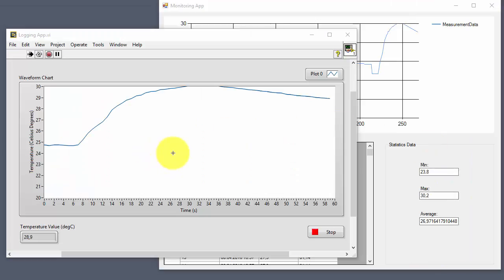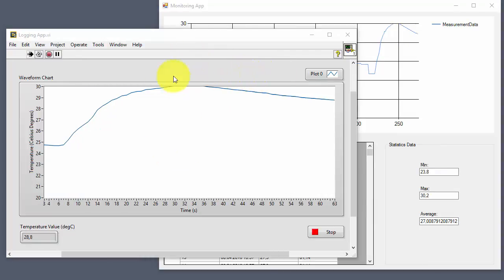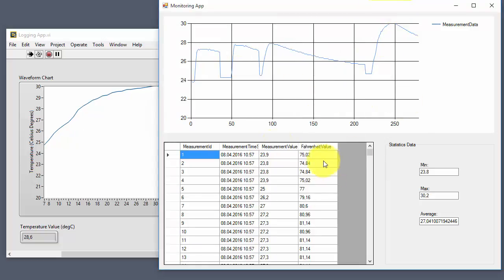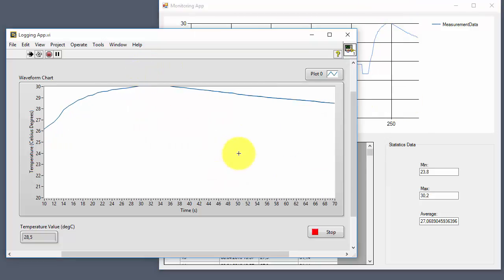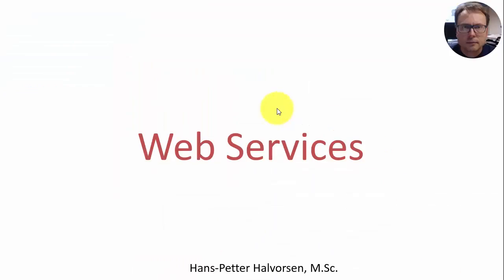This example shows how easy it is to create a measurement system with a data logging application and monitoring application where the data are stored in the cloud and all the analysis is also done in the cloud. So far in these examples we have a direct connection to the database stored in the cloud. However, there are some problems with this solution because we need to enable the firewall within Windows Azure to connect to the database, and since we are typically on a computer with a dynamic IP address, in general this is not a good solution.